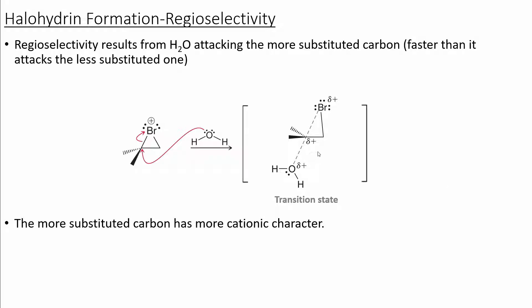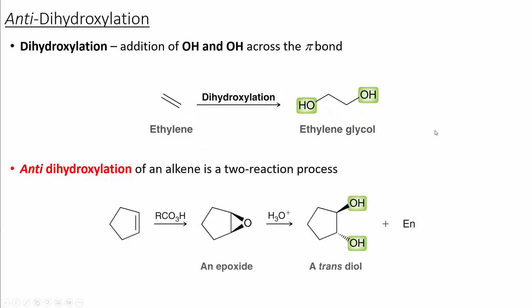This regiochemistry results from the more substituted carbon having more cationic-like character. The next set of reactions that we'll look at are the dihydroxylation reactions. In this series, we'll look at multiple sets of conditions which allow us to obtain both the syn and anti-dihydroxylation products. In order to form the anti-dihydroxylation product, we can use a two-step process.